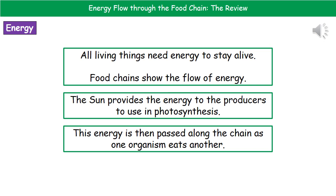The sun provides energy to our producers, they carry out photosynthesis and convert that energy into new forms — in chemicals. That energy is then passed along from the producers through the food chain as one organism eats the next.